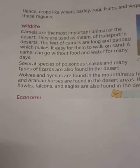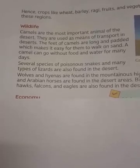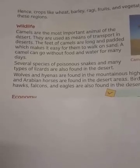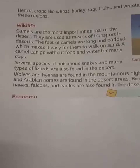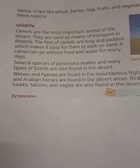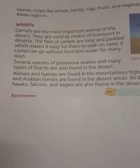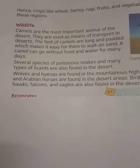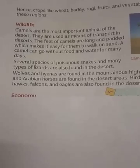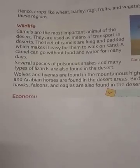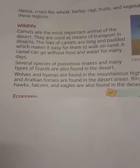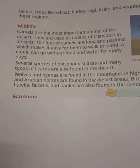Jackals and Arabian horses are found in the desert area. Coming to birds, vultures, hawks, falcons, and eagles are also found in the desert. So mainly the camel is the key wildlife used for transportation of goods and passengers in the desert region, along with snakes, wolves, hyenas, horses, hawks, falcons, eagles, and vultures.